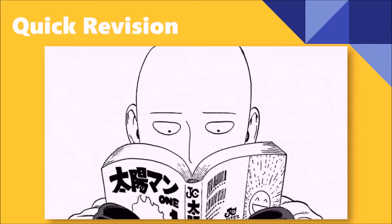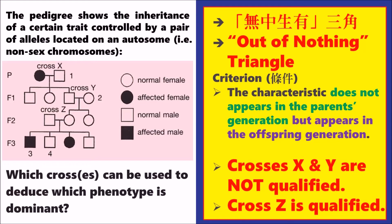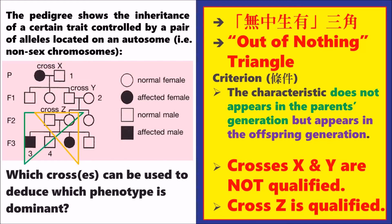Let's have a quick revision from last video. I talked about the pedigree analysis skill called the out of nothing triangle. This helped us to choose the suitable cross in the family and determine the dominant and recessive allele. The criteria for choosing the suitable cross is to identify that the characteristic does not appear in the parents' generation but appears in the offspring generation. Therefore, crosses X and Y are not qualified, but cross Z is qualified.